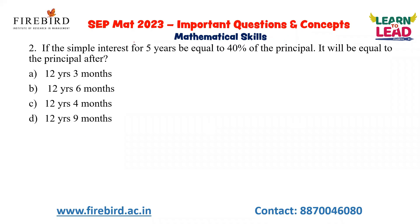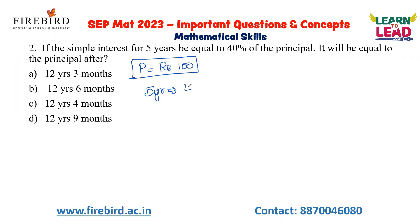Now see the next question: If the simple interest for 5 years is equal to 40% of the principal, after how many years will it equal the principal? When the question involves just a percentage value, you can assume a value. For easy calculation, take the principal as 100. After 5 years, I will receive 40 rupees as interest — 40% of 100 is 40. So for 5 years it is 40, meaning for 1 year it is 8.